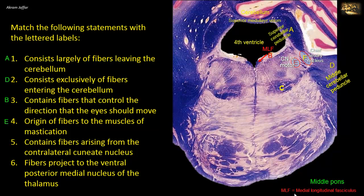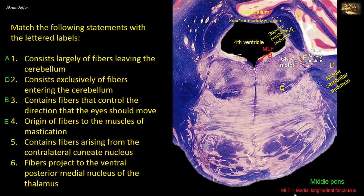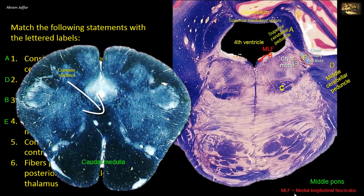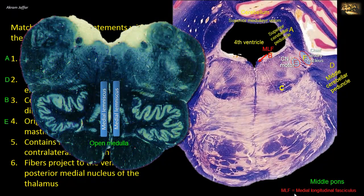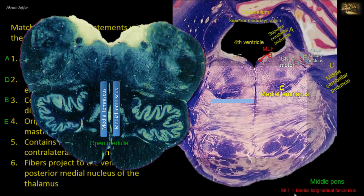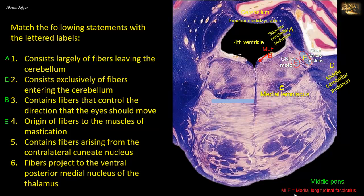Statement 5 contains fibers arising from the contralateral cuneate nucleus. These fibers cross the midline in the medulla at the level of the sensory decussation and form the medial lemniscus. The medial lemniscus ascends through the medulla to the pons and midbrain on its way to the thalamus. At the level of the medulla it extends dorsoventrally on either side of the midline, but once it reaches the pons, it rotates in the ventral part of the pontine tegmentum so that it is aligned in a medial-to-lateral direction, represented here in C.